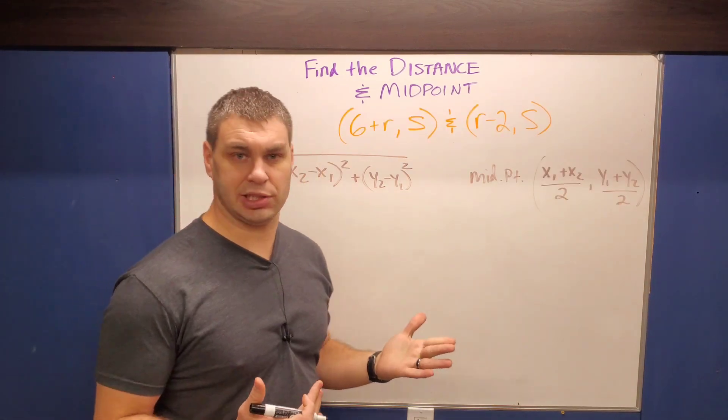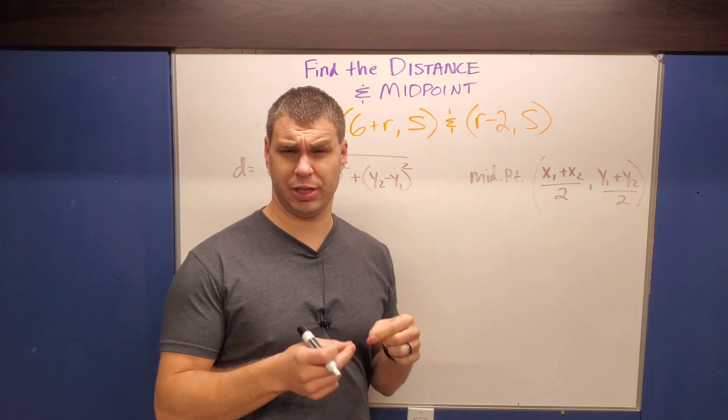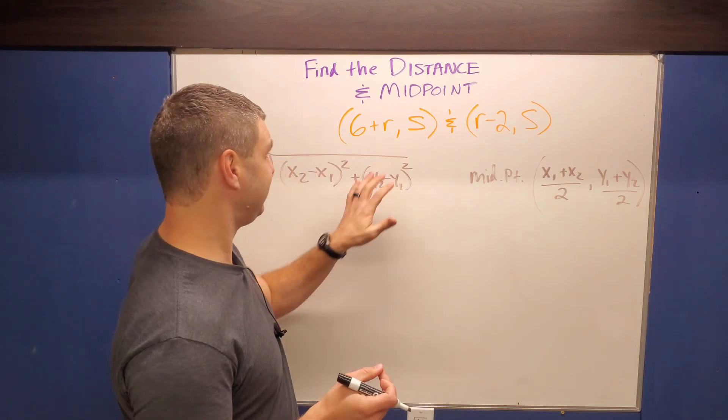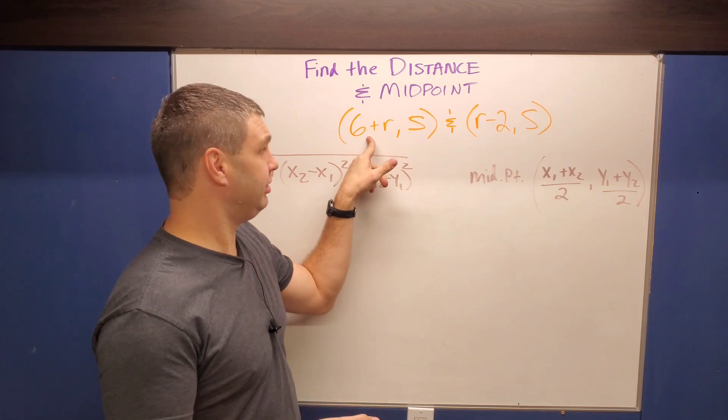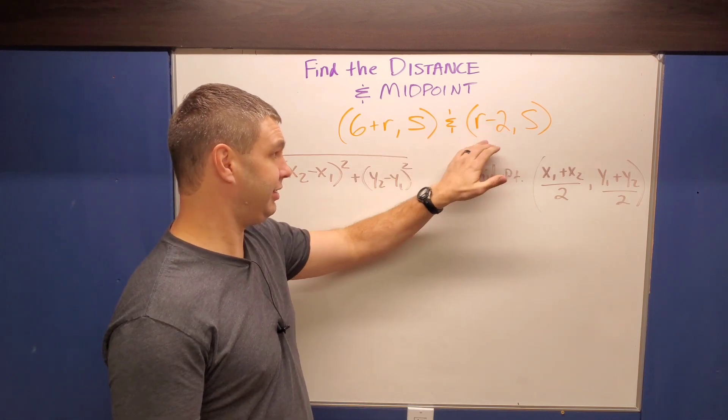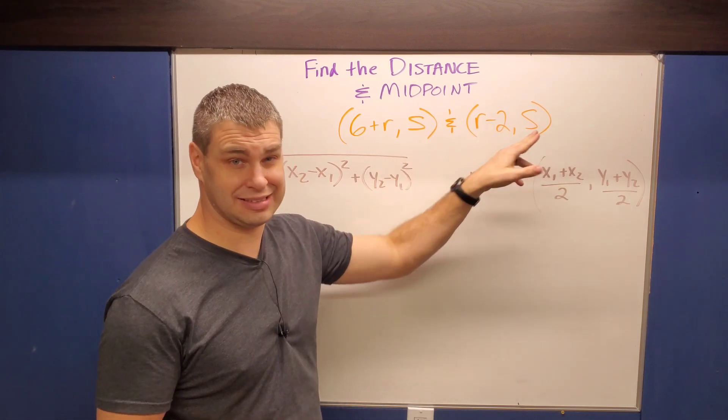This problem is a little bit harder for a few different reasons than our first one. If you remember that first one had those square roots and things, this one, the two points we're working with, one of them has like six plus R and then another variable S, all right, and then an R minus two and another S.